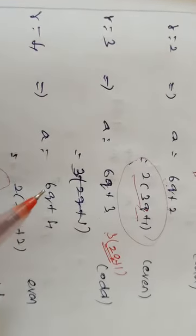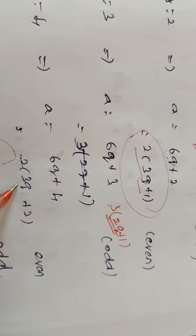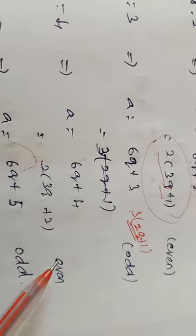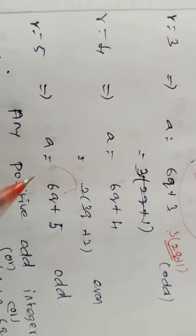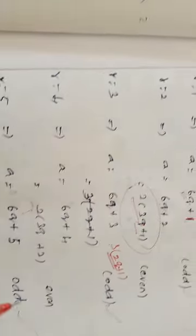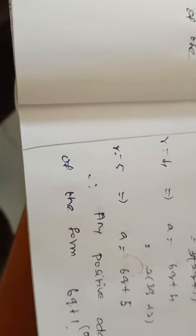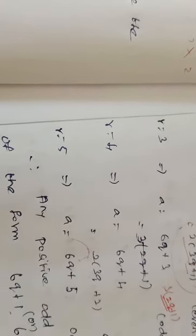Now R equal to 4: A equal to 6q plus 4. Taking 2 as common between first and second terms: 2 into 3q plus 2, so 2 into some number — we can write 2m, that is an even number. Now if R equal to 5, A equal to 6q plus 5. Even number plus odd number gives an odd resultant. So, every positive odd integer is of the form 6q plus 1, 6q plus 3, or 6q plus 5. Every even integer is of the form 6q, 6q plus 2, or 6q plus 4.